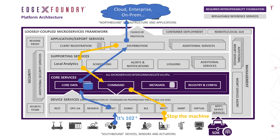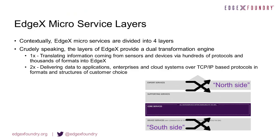At the export distribution microservice, data is filtered, transformed, and generally made available to any cloud, enterprise, or on-premise solution that wants and needs that sensor data. It is also made ready for the EdgeX rules engine or local analytics, where EdgeX can turn sensor data into low-level intelligence. For example, it can determine if a temperature reading is too high and, if so, communicate with a device to shut it down via the command microservice and potentially other device services.